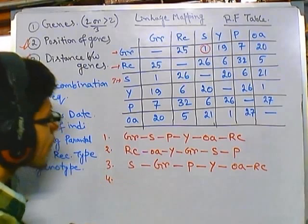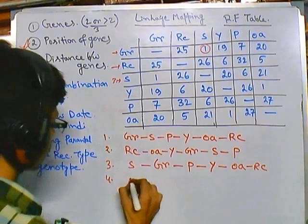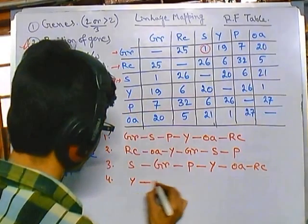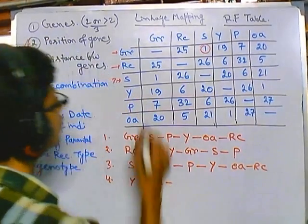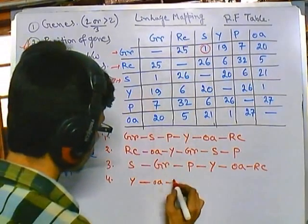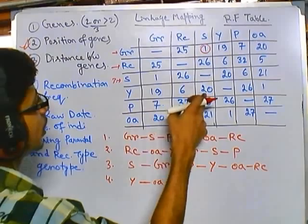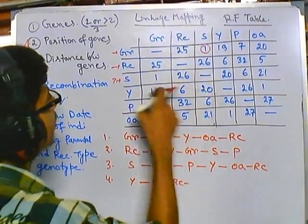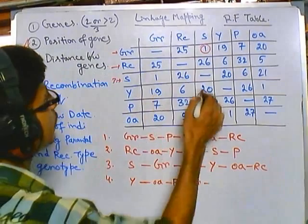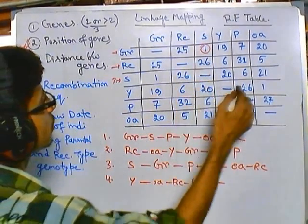The fourth row starts with Y. After Y, the least value is with OA. After OA, what we get is six, which is RC. After RC, we get GR. After GR, we get 20, which is S. After S, we get 26, which is P. So the arrangement for the Y row is: Y, OA, RC, GR, S, P.